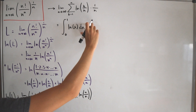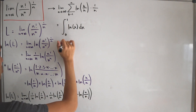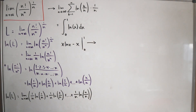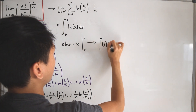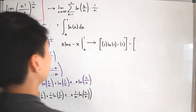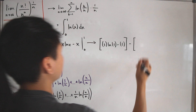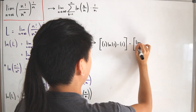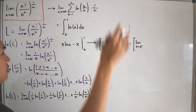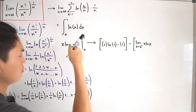We can apply integration by parts: let u equal ln(x) and let dv equal dx. Putting this all together gives x times ln(x) minus x, evaluated from 0 to 1. Plugging in 1: we get 1 times ln(1) minus 1. For the lower bound, we need to be careful because ln(0) is undefined, so we write it as the limit as x approaches 0 plus of x times ln(x), minus 0.